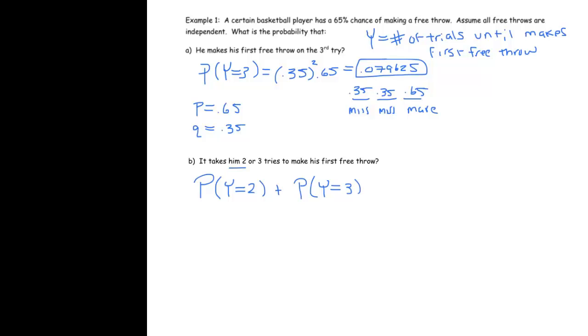We're adding these two because we're not just interested in the probability it takes him 2, we're interested in the probability it takes him 2 or 3. So we need to find these probabilities and then add them up.